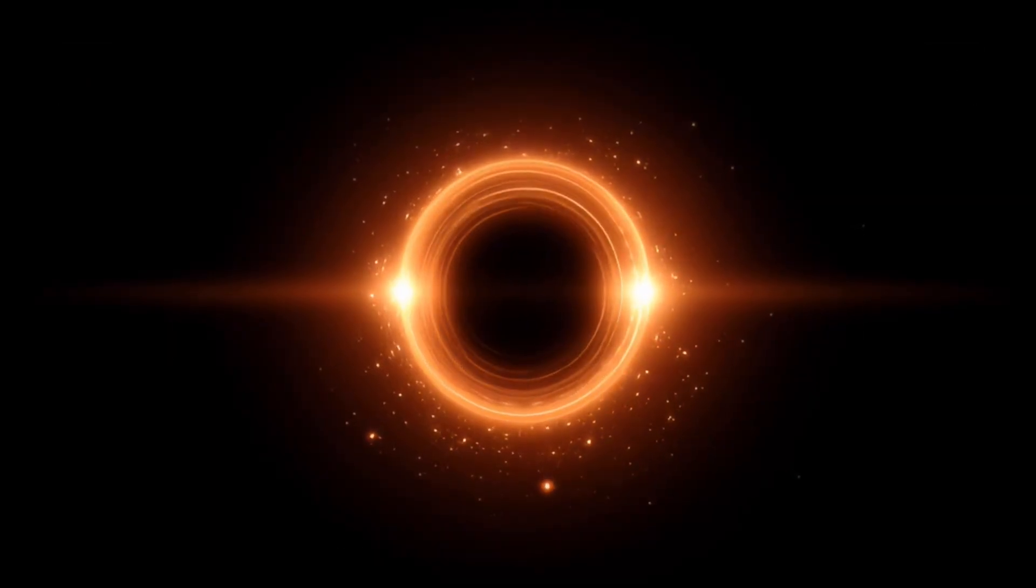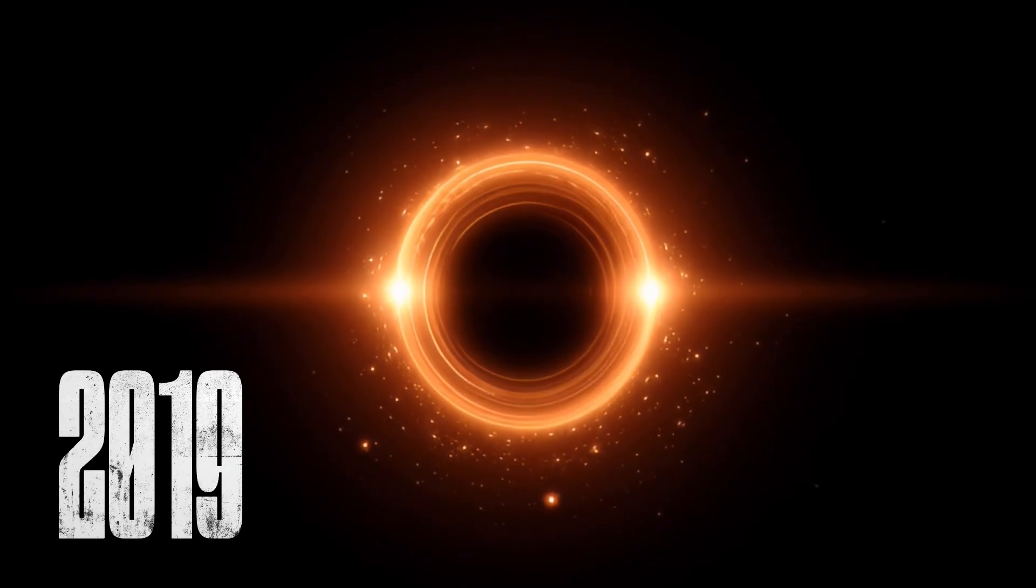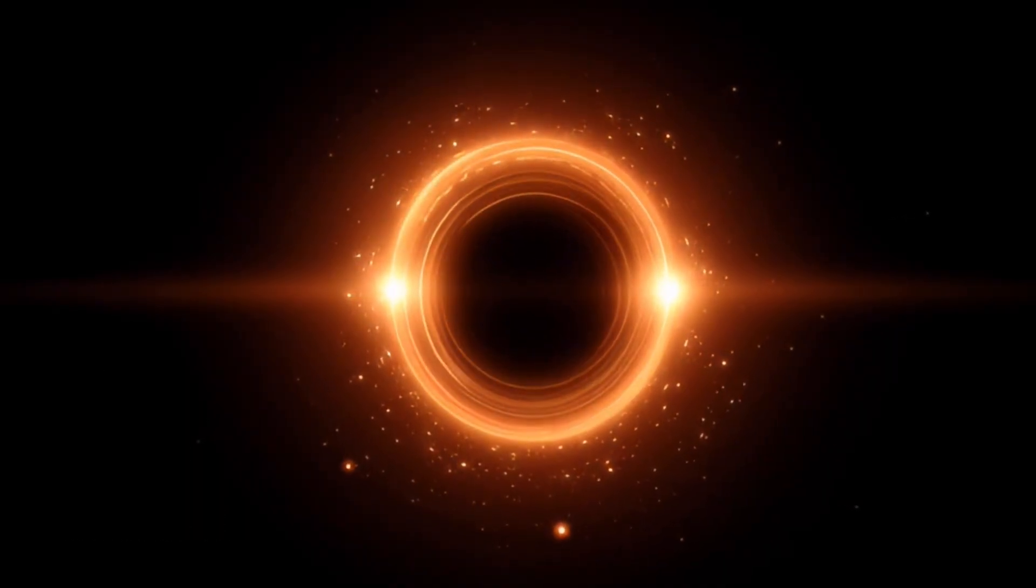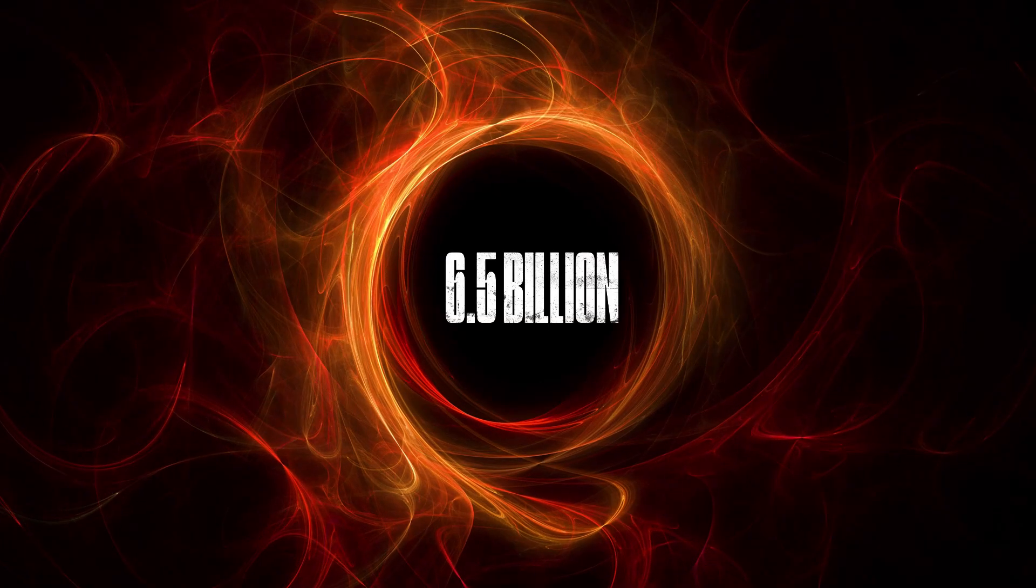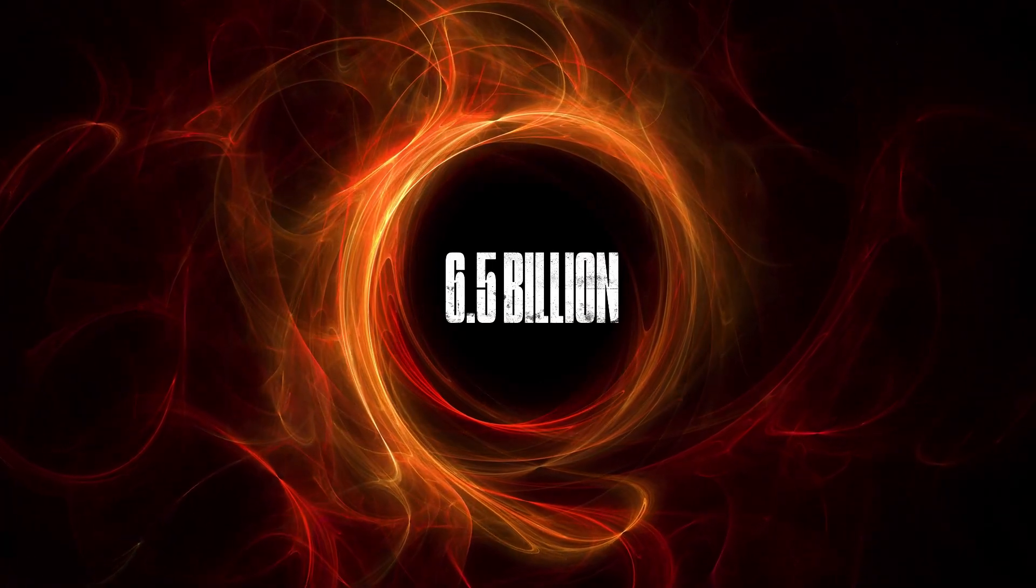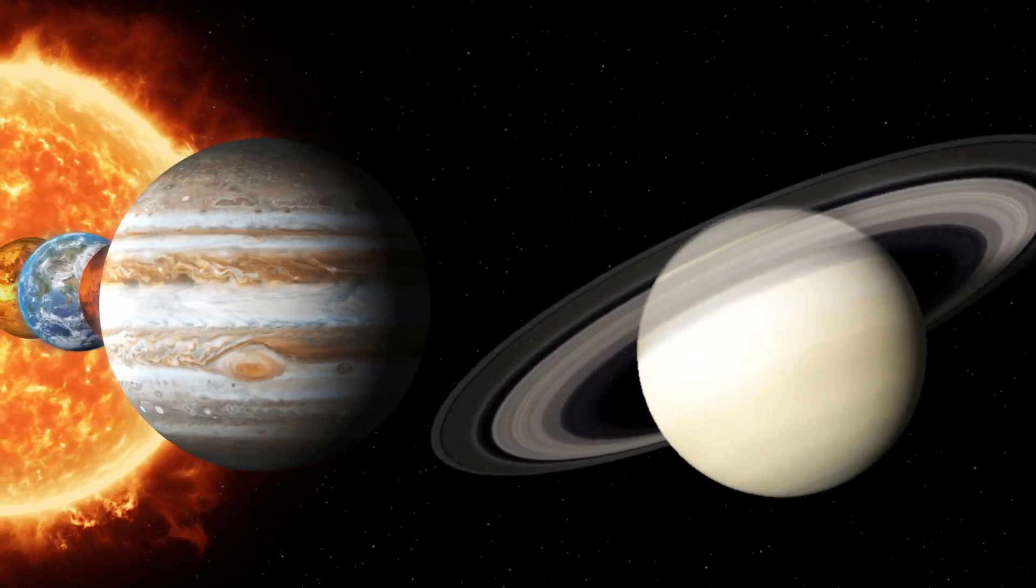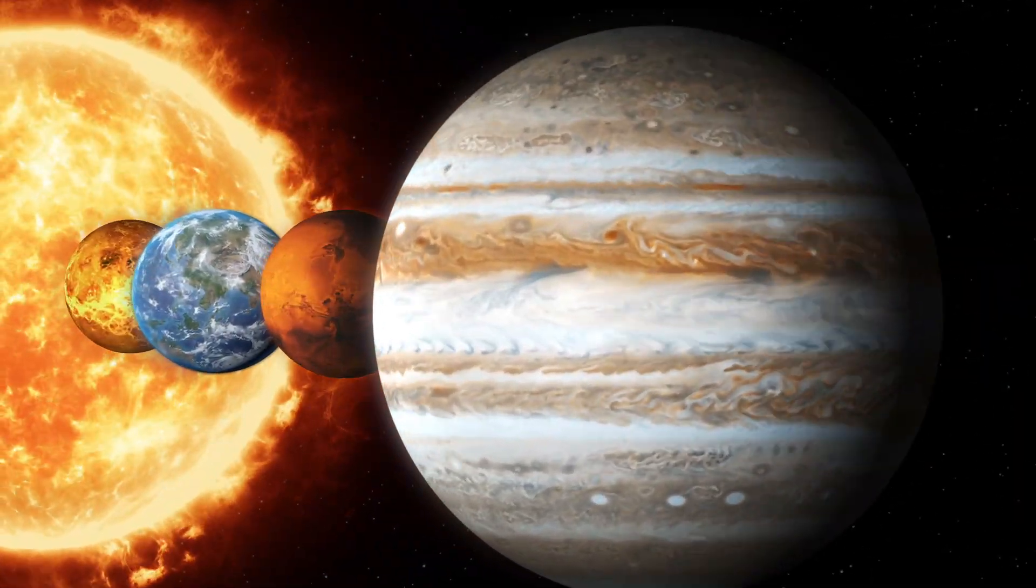That fuzzy orange donut you saw all over the internet in 2019? That was M87's supermassive black hole, and it's 6.5 billion times more massive than our sun. Let that sink in for a second. We took a picture of a monster whose event horizon could swallow our entire solar system several times over.